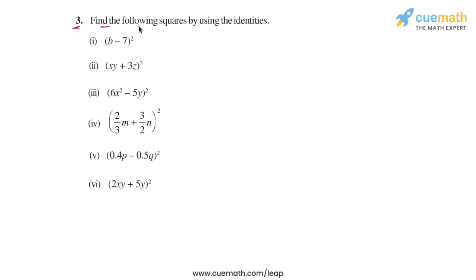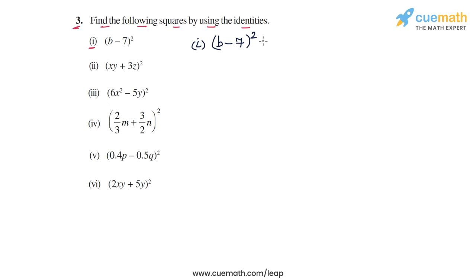In question 3, we have to find the following squares by using the appropriate identities. Let's start with the first part. In the first part, we have to calculate the square of b minus 7, that is b minus 7 whole square. This is of the form a minus b whole square, so let's expand it using the appropriate identity.